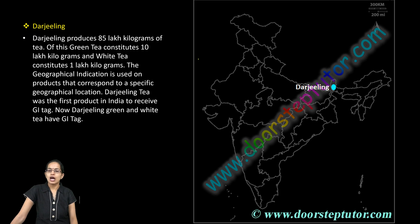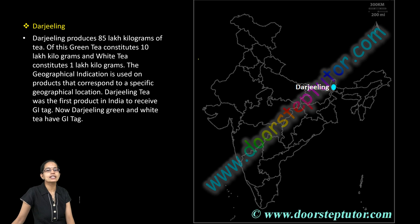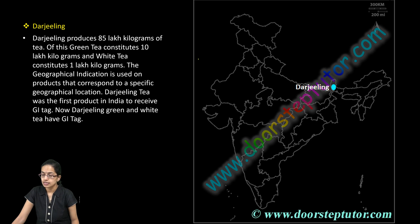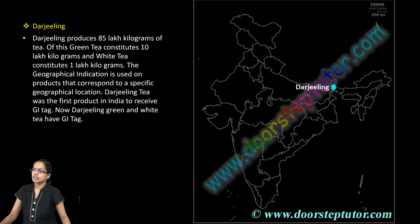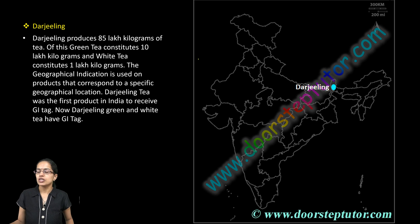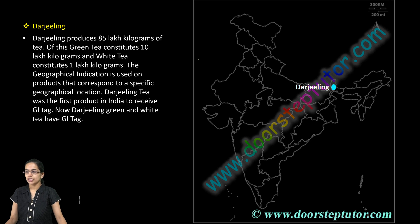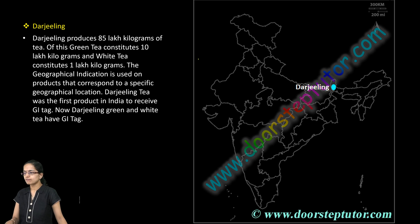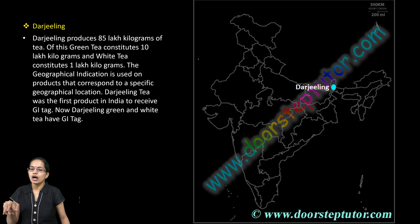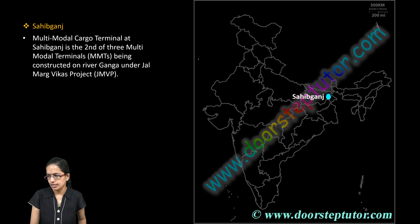The next is Darjeeling, known for its tea. Recently, green tea and white tea of Darjeeling have received a GI — Geographical Indication — tag. Darjeeling produces nearly 85 lakh kilograms of tea every year, of which green tea constitutes nearly 10 lakh kilograms and white tea nearly 1 lakh kilograms. Both of these now have a GI tag.